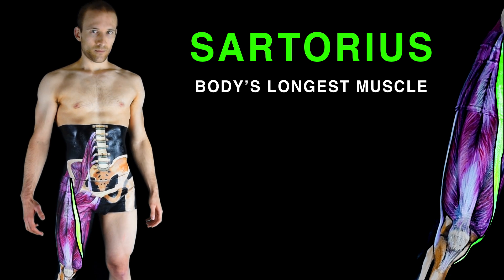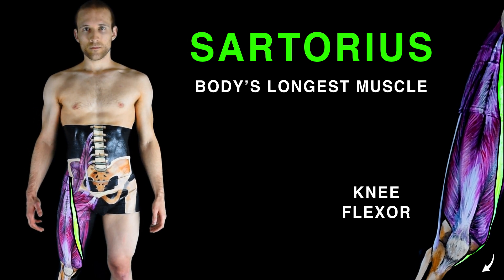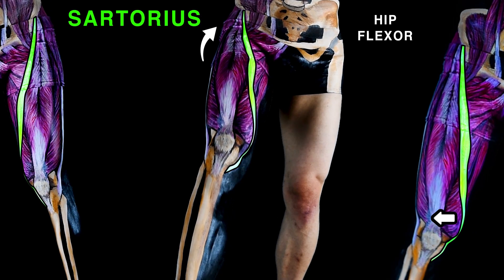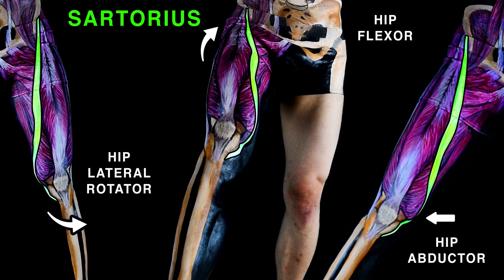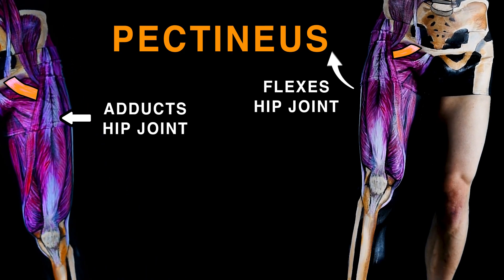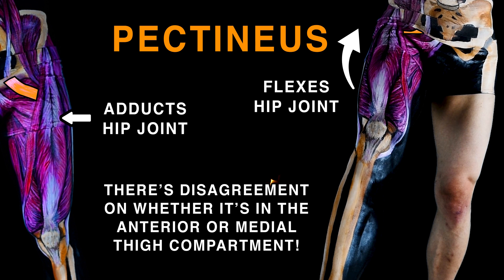The sartorius, the body's longest muscle, is a knee flexor. It's also a hip flexor, abductor, and lateral rotator. Pectineus adducts and flexes the hip joint, and there's disagreement on whether it's in the anterior or medial thigh compartment.